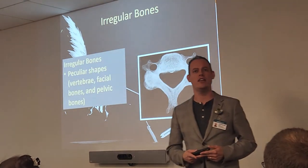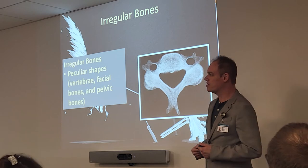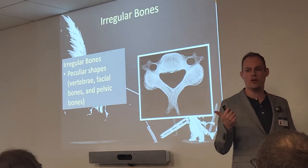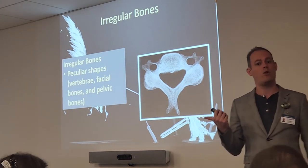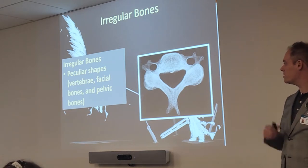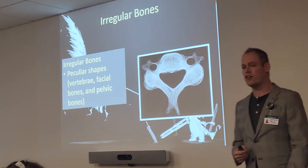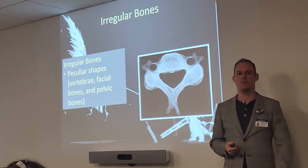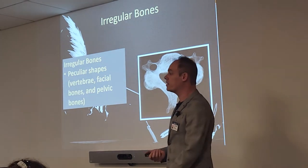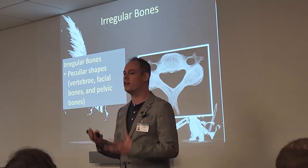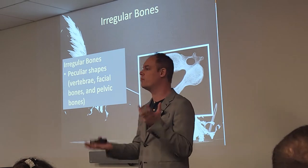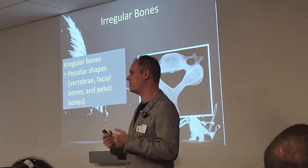Next bone classification: the irregular bones. We'll talk about most of these in Rad Pro 3, but there is one in particular we'll talk about at the end of the semester — your pelvis. Your vertebrae, facial bones, and pelvic bones all fall under irregular bones because they all have very unique shapes. They don't share any shape with one another.